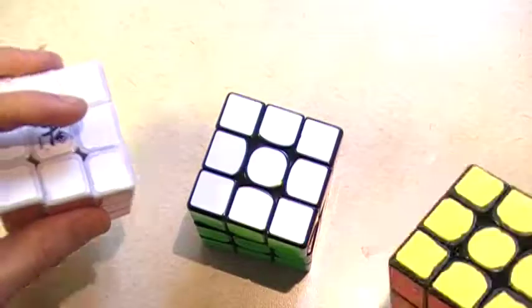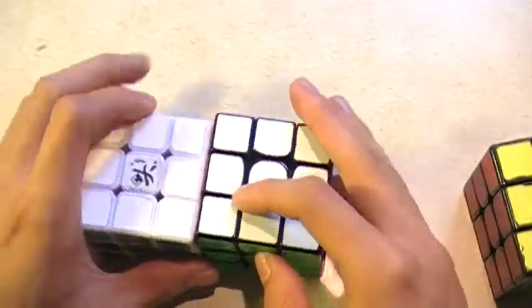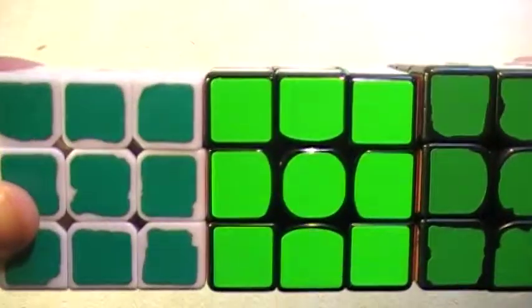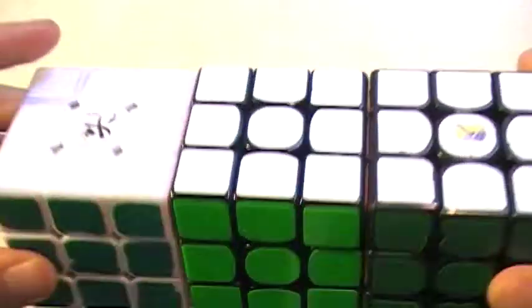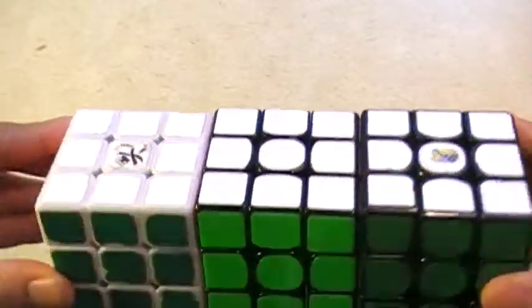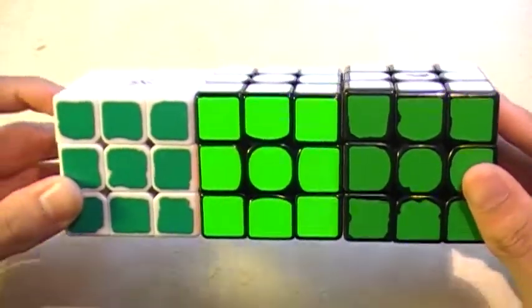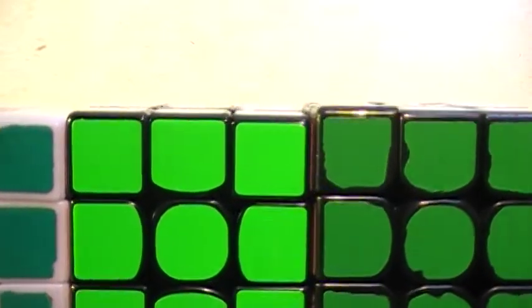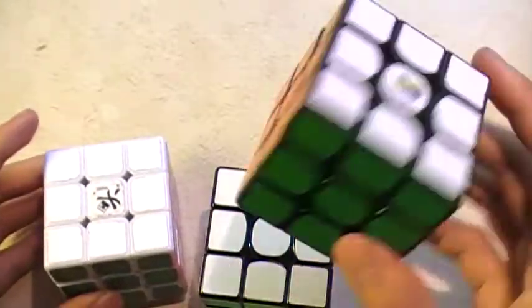I'm going to do a quick size comparison. This is a 55mm Zanshi on here and this is a Uxen 3x3, my main. As you can see, it's right in between these two. This is a 55, the Gans 356 which is 56, and this is the Uxen 3x3. So it's not much bigger or smaller than the 55mm Zanshi or the Uxen.